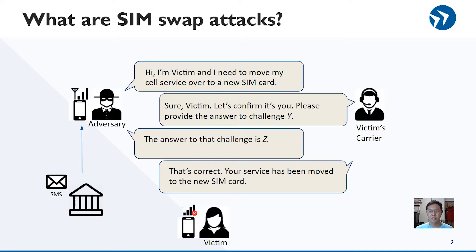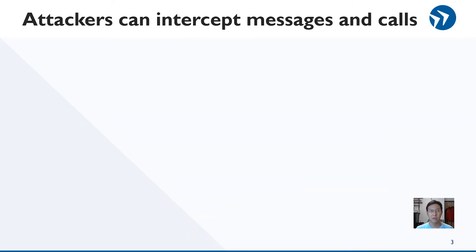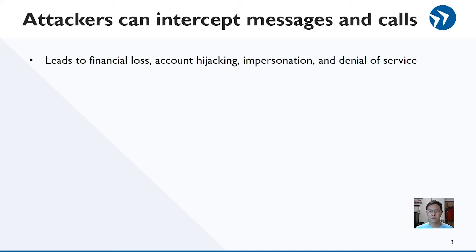In our diagram, the victim also uses SMS two-factor authentication for her bank account. As a result, the adversary can now receive passcodes used for authentication. Clearly, attackers can abuse this to hijack phone numbers. Once they have taken over a number, attackers can bypass SMS two-factor authentication and perform further impersonation attacks.